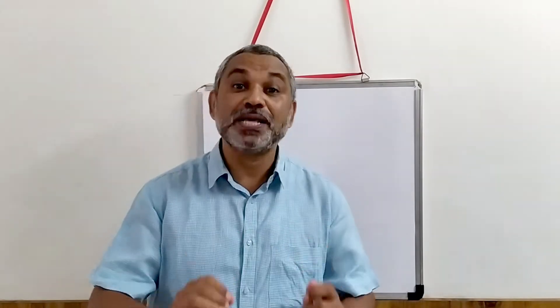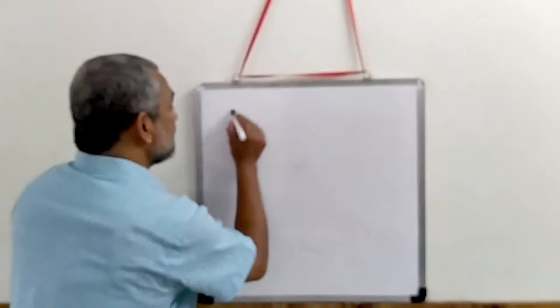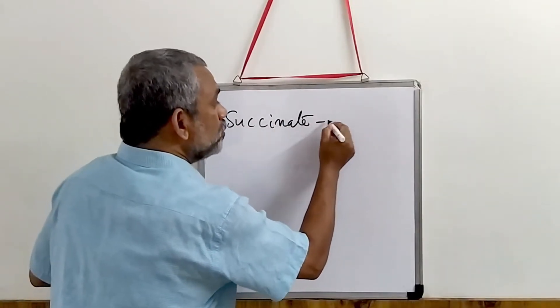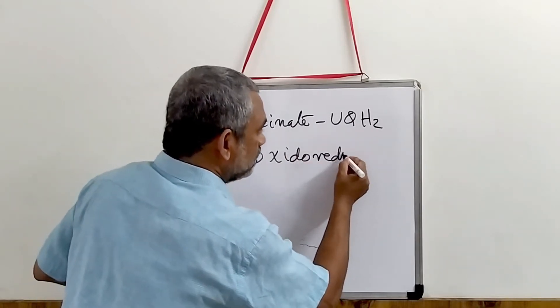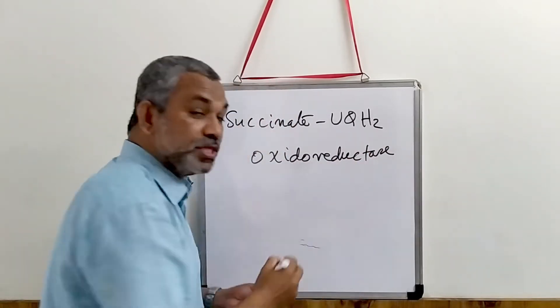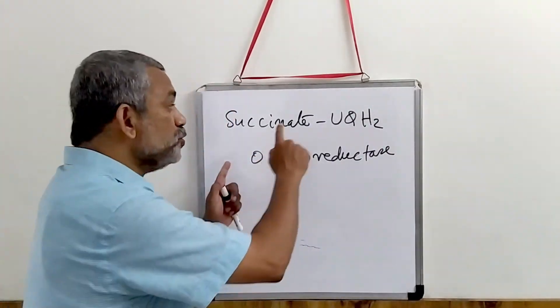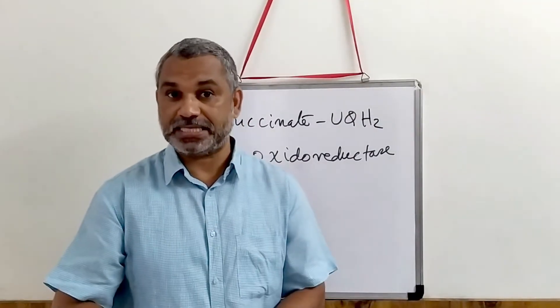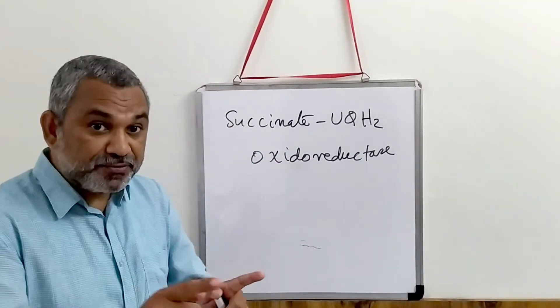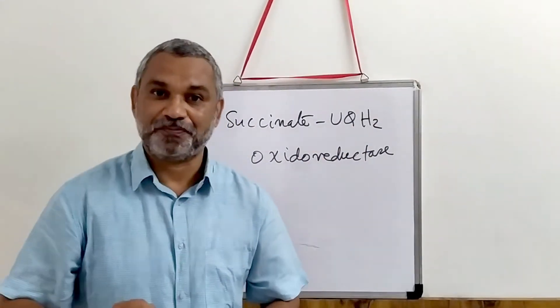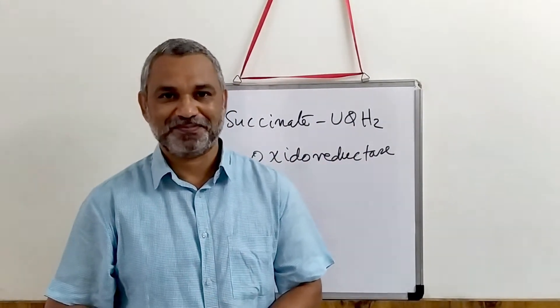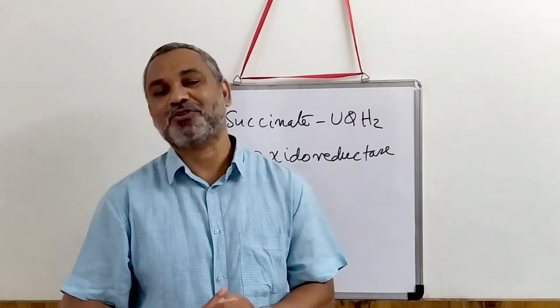Now let us look at how electrons are transported in Complex II. Complex II is called succinate UQH2 oxidoreductase. This name means it will transfer electrons from succinate, and the receiver is UQH2. Now look at the structure of this complex.